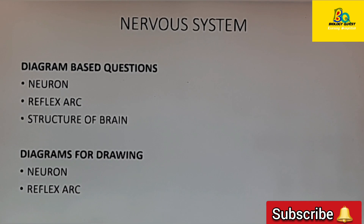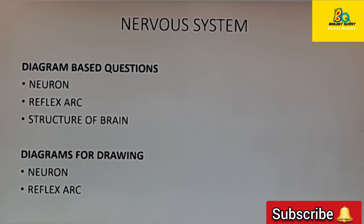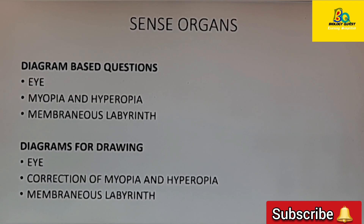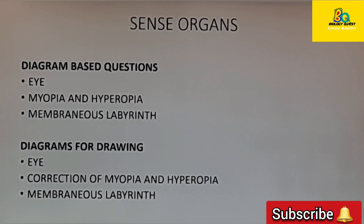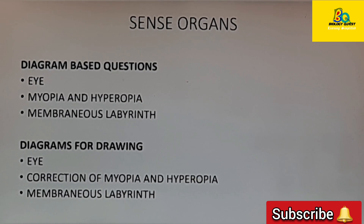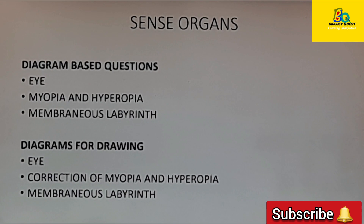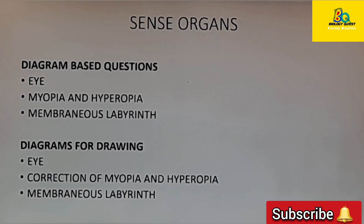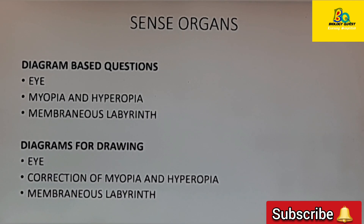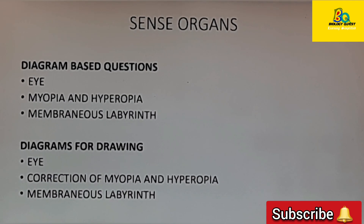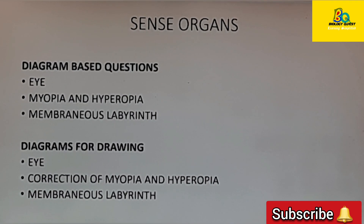Please draw and study all those diagrams. Moving on to the next chapter, sense organs — the diagrams you can expect as diagram-based questions are the structure of the eye, defects of the eye such as myopia and hyperopia, and membranous labyrinth. For drawing, you should study the structure of the eye, correction of myopia and hyperopia, and membranous labyrinth.